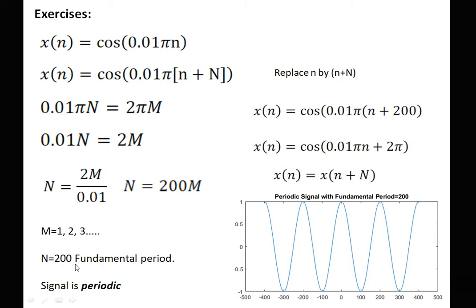Therefore N = 200 represents the fundamental period and the signal is periodic. We verify: x(n) = cos(0.01πn + 200 × 0.01π) = cos(0.01πn + 2π), and since adding 2π repeats the signal, x(n) = x(n + N). The fundamental period of this signal is 200.